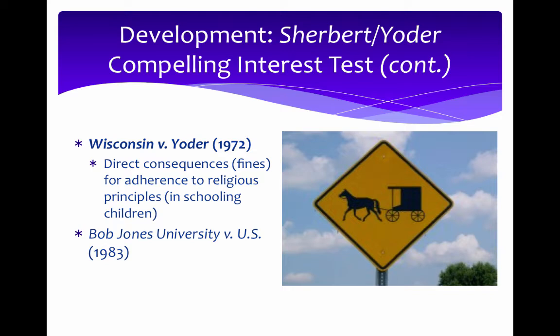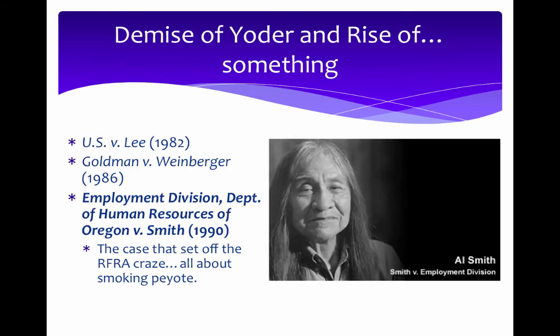Running contrary to Sherbert and Yoder is the Bob Jones University case. Bob Jones University, a notoriously conservative university, claimed exemption from certain requirements for universities accepting federal student financial aid — primarily things like affirmative action and sexual harassment policies. The Supreme Court said they were not exempt, that this was definitely meeting the compelling interest test. So Sherbert and Yoder are not exactly bad law, but they're not exactly the gold standard in terms of free exercise either.